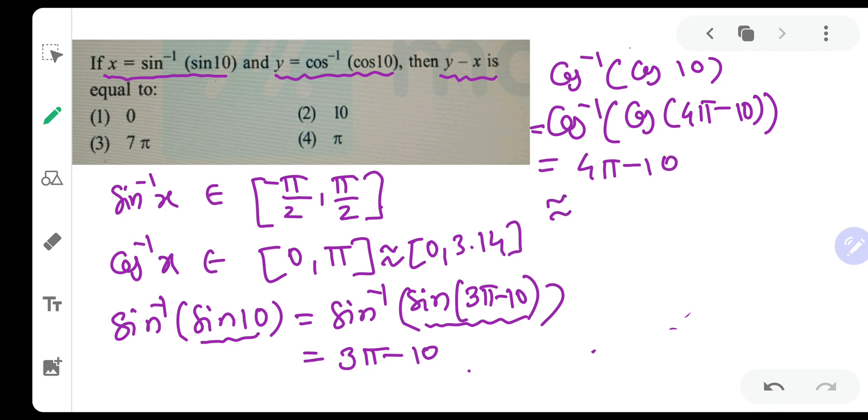Now, 4 pi minus 10 will be approximately equal to 12.56 minus 10 because pi is approximately equal to 3.14. So this will be equal to 2.56. And 2.56 very well lie in the range of 0 to 3.14. Hence, our answer 4 pi minus 10 is totally right.